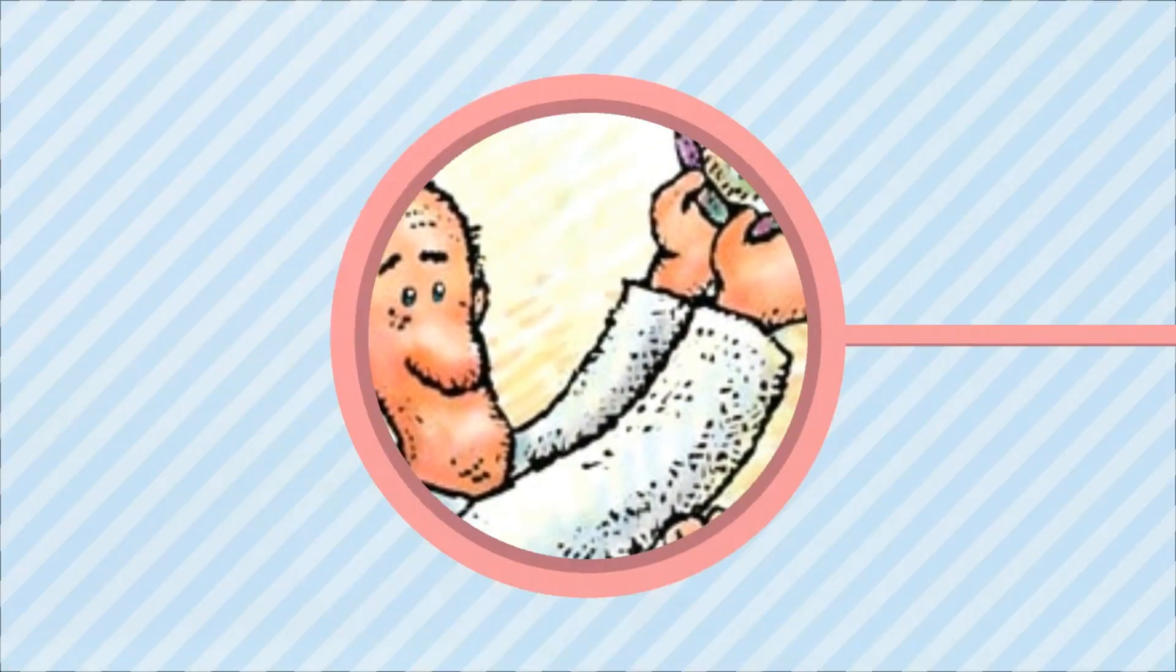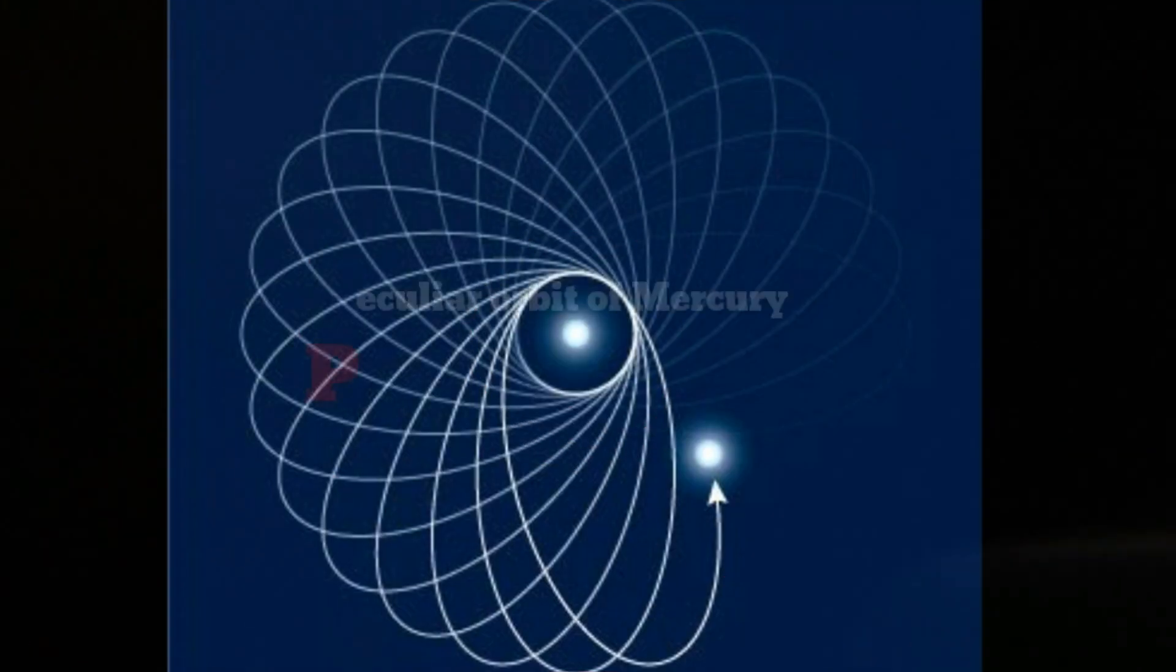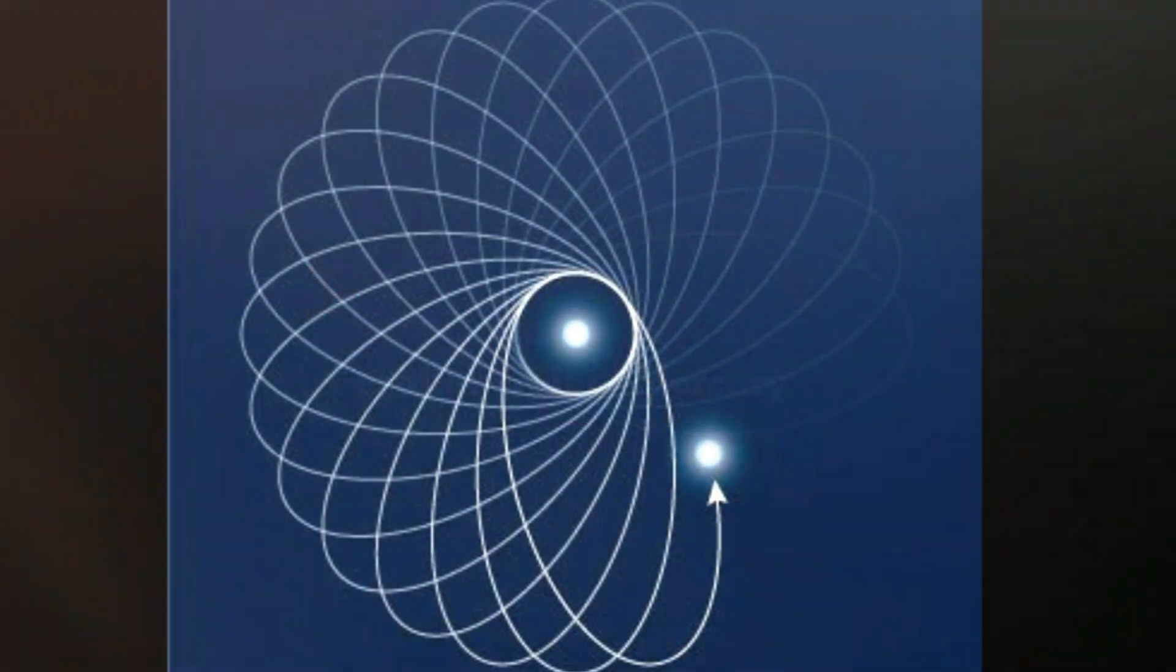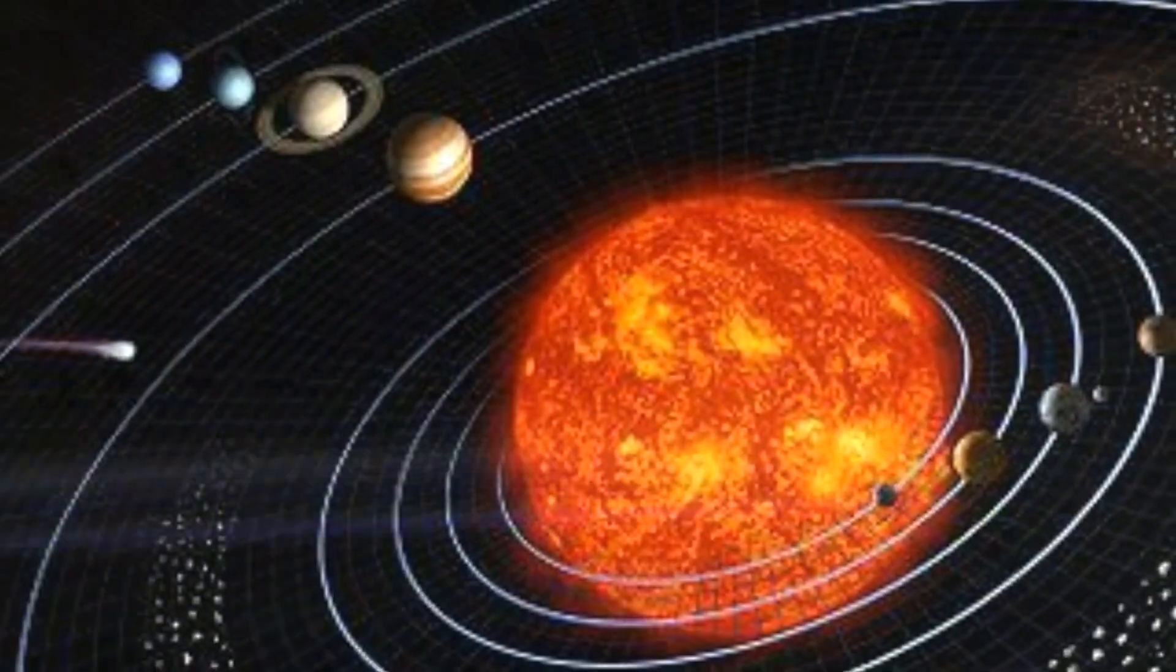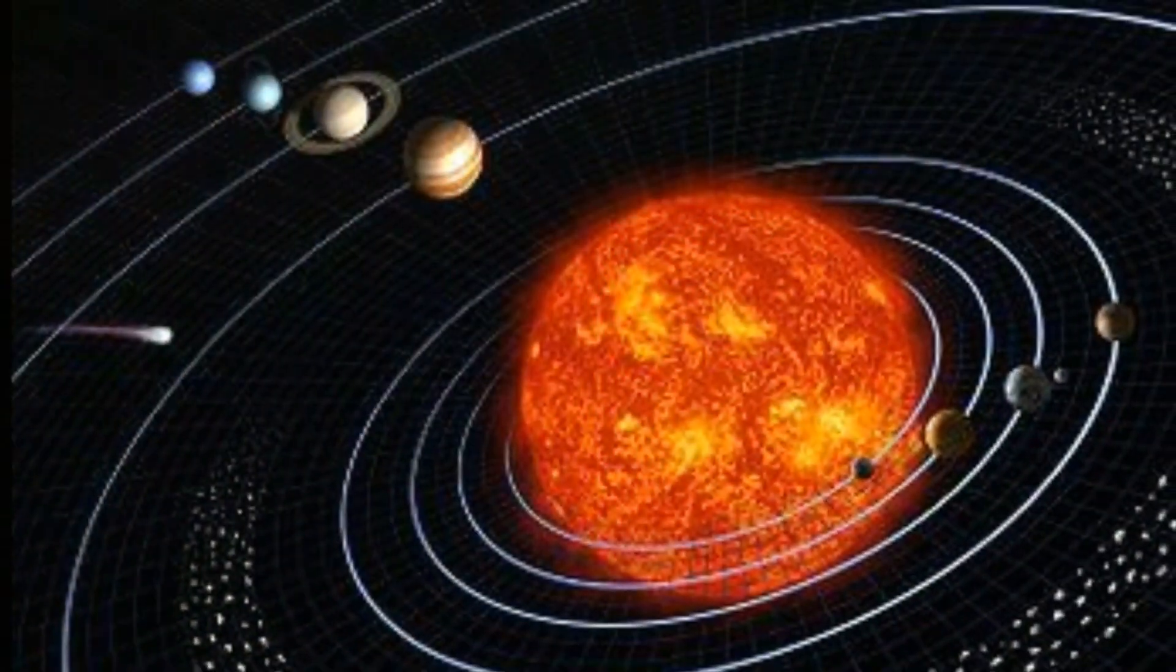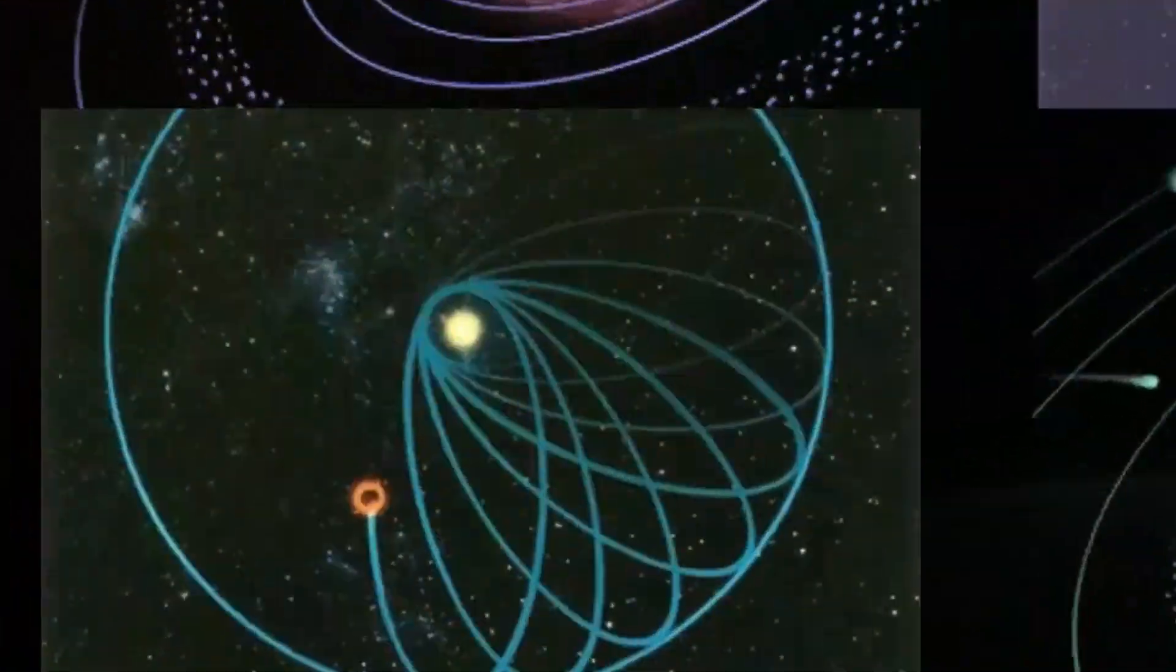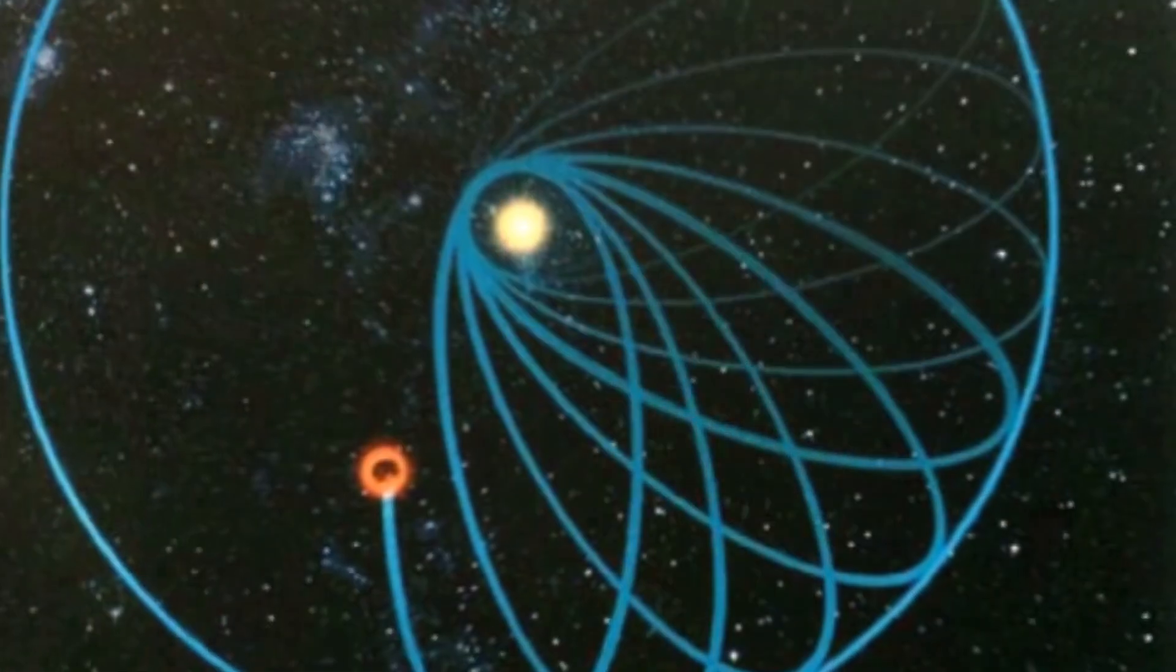Number two: Peculiar orbit of Mercury. Mercury does not have a common orbital path around the Sun as like the other planets of the solar system. Rather, it changes its path of revolution to a certain extent with each revolution around the Sun. This phenomenon is again explained by general relativity.